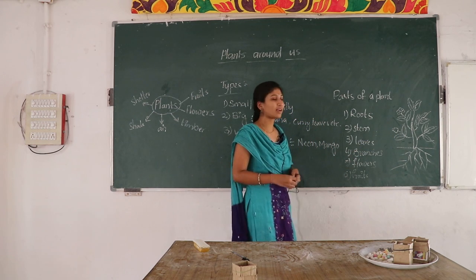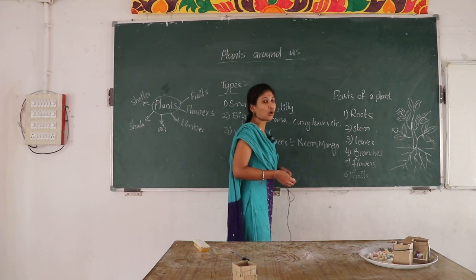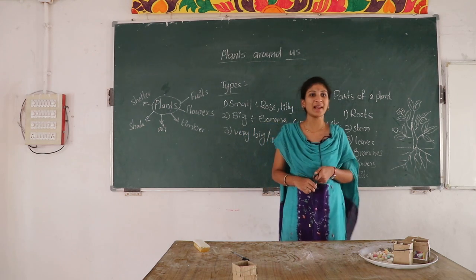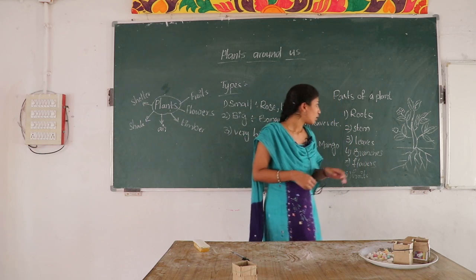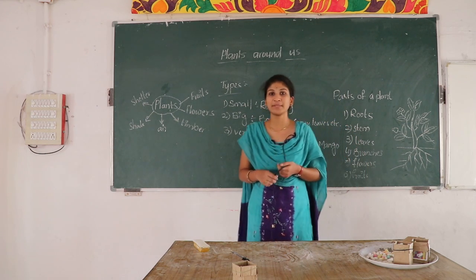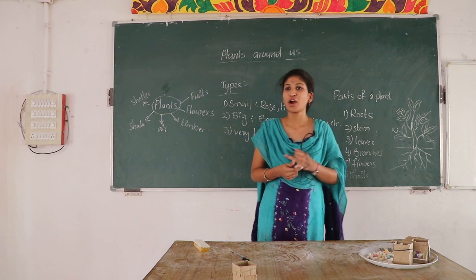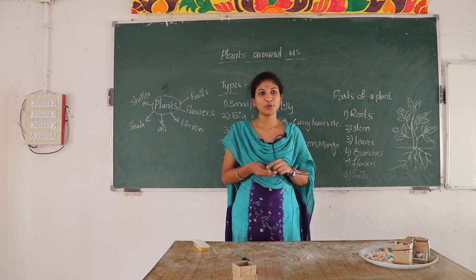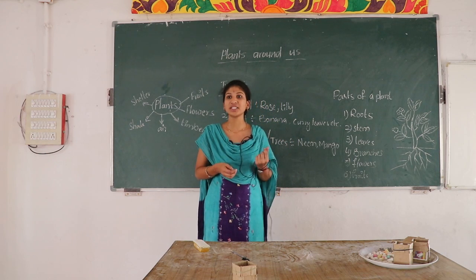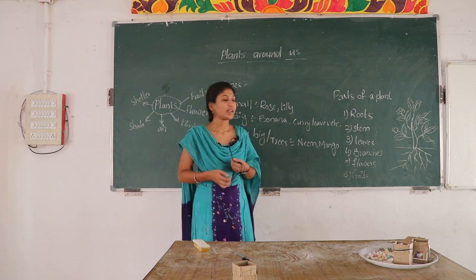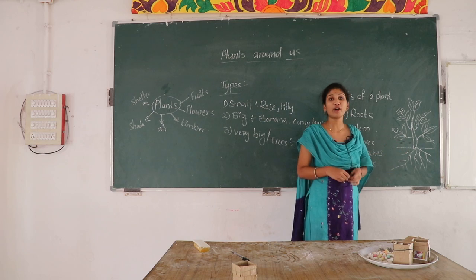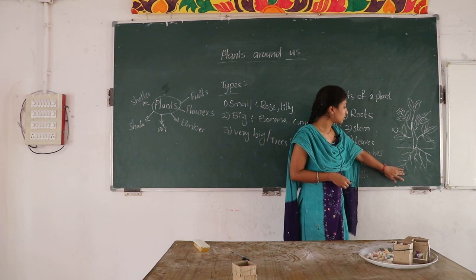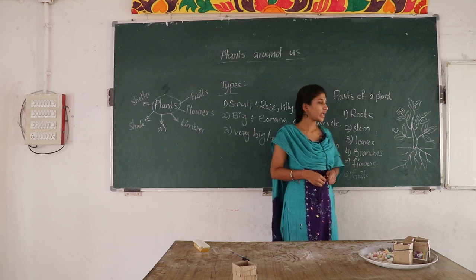Now, parts of a plant and their functions. Roots — do you know how the roots are helpful to the plant? The foundation gives support to the house. Like that, the roots help the plant to stand erect. The plant absorbs water and nutrients through the roots. Roots grow in the soil.